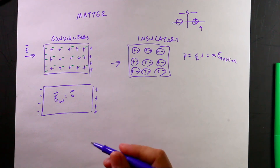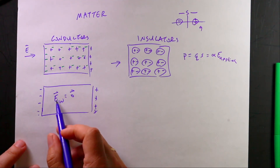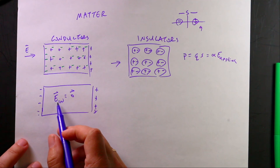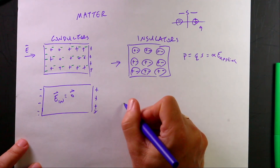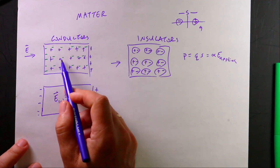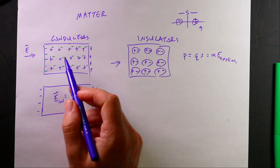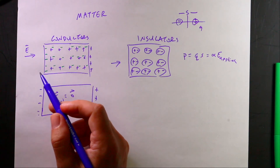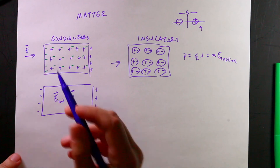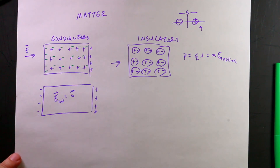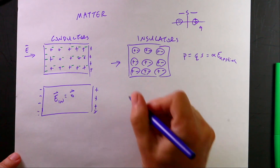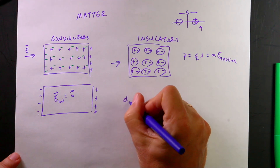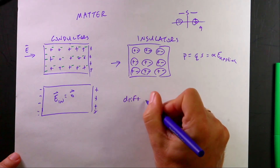If you do have a constant electric field inside a metal, the electrons will accelerate but collide with the atomic cores — they speed up and slow down repeatedly — giving some average velocity. We call this the drift velocity, and it's going to be really important later.